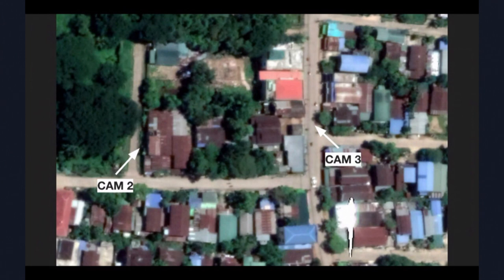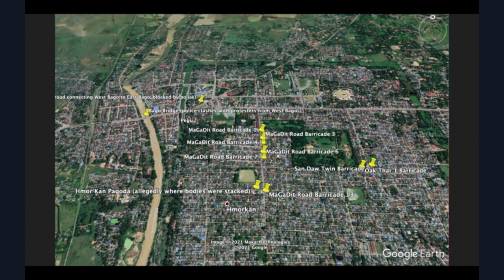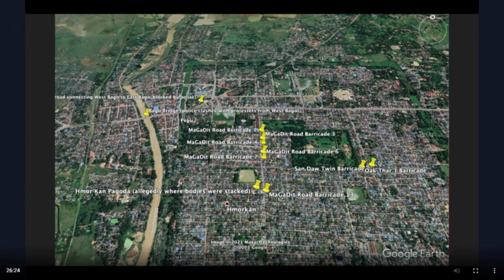Finally, once you do this across different videos and use satellite imagery, you can verify where multiple videos were filmed. In this example, I was able to verify that one video had been filmed on the same block on the opposite side of another video. When you do this at scale and use satellite imagery, you get a bird's eye view of the situation. Using Google Earth, I was able to pinpoint where all the videos and social media posts were referring to, giving me a broader view of what was happening.